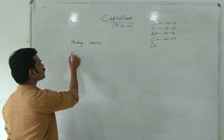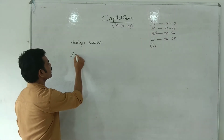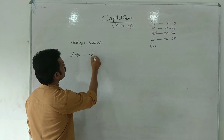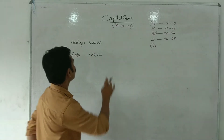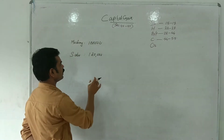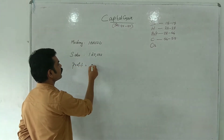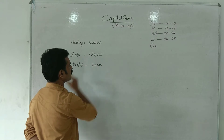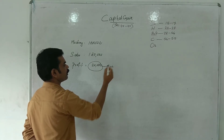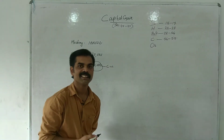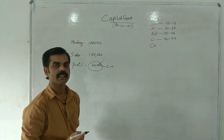You purchase machinery for 1,20,000 and sell it for 1,25,000. The profit of 5,000 — or in this case 20,000 — is the gain. This chapter teaches how to calculate this tax.